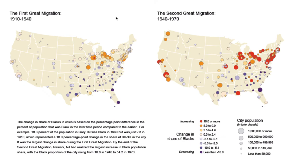Internal migration, also known as inter-regional migration, is migration within a country or state. For example, this map shows the first Great Migration, when African Americans left the South and moved North to major cities like Detroit, Chicago, and New York. The second Great Migration shows those same cities continuing to grow, but also western cities like Los Angeles, San Francisco, San Diego, and Portland, Oregon seeing growth.